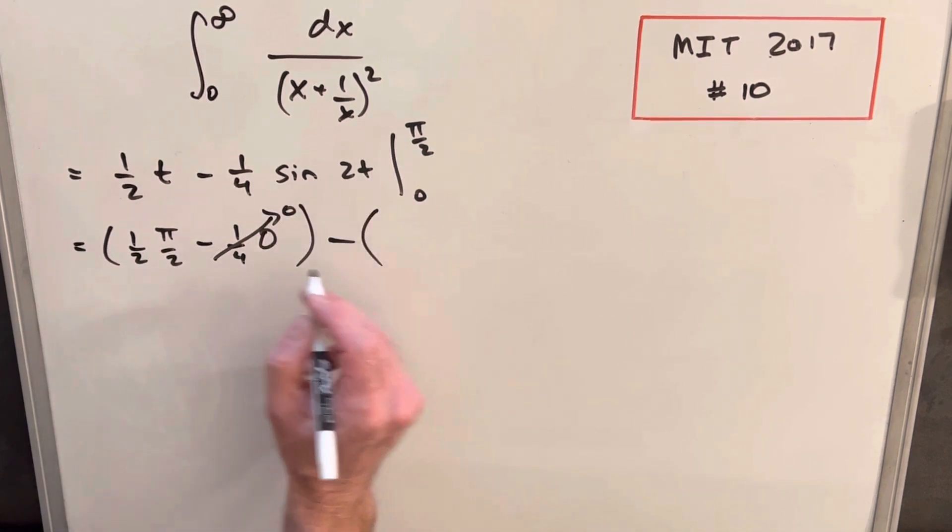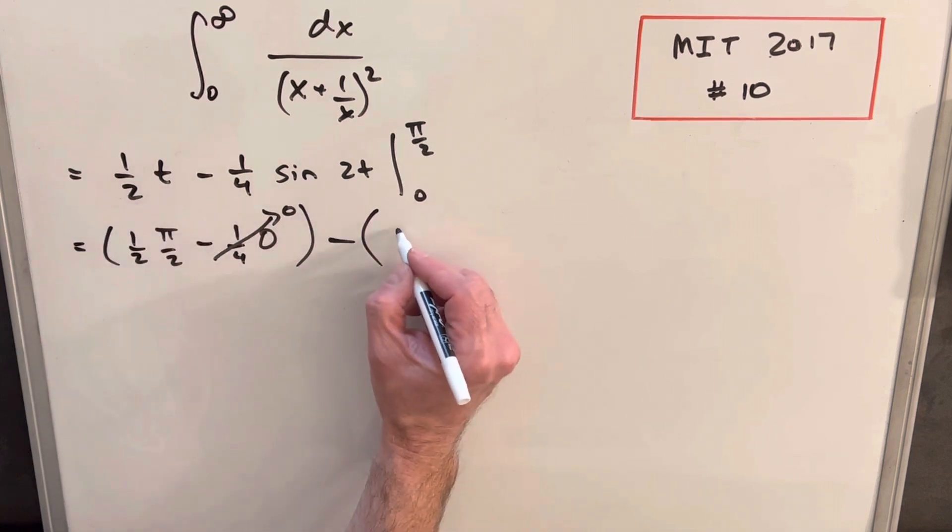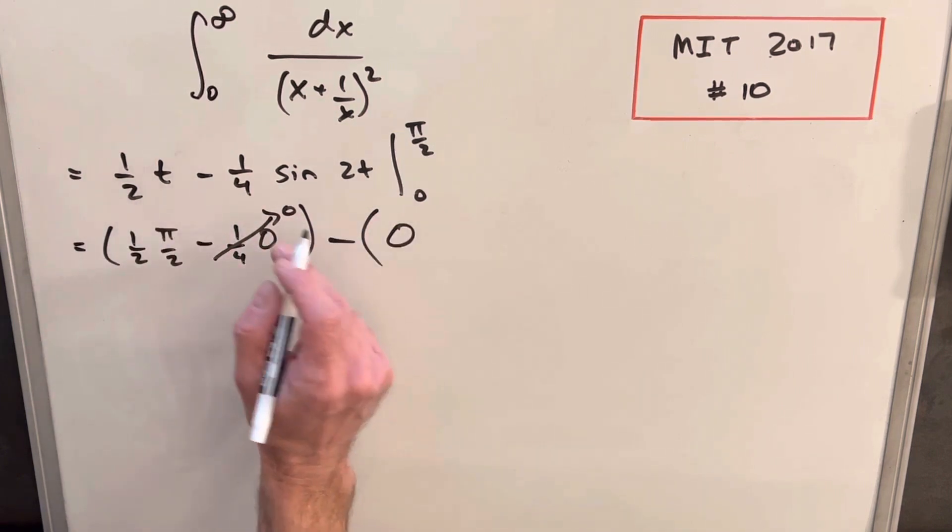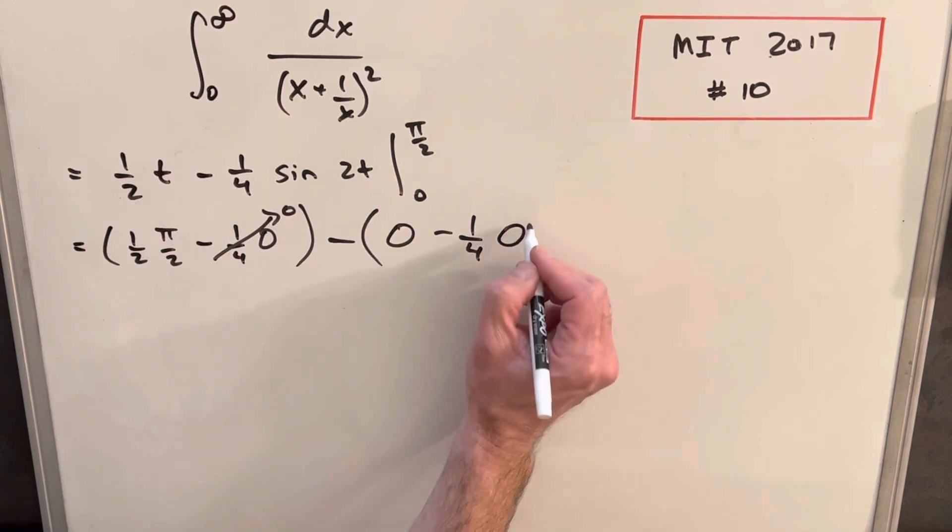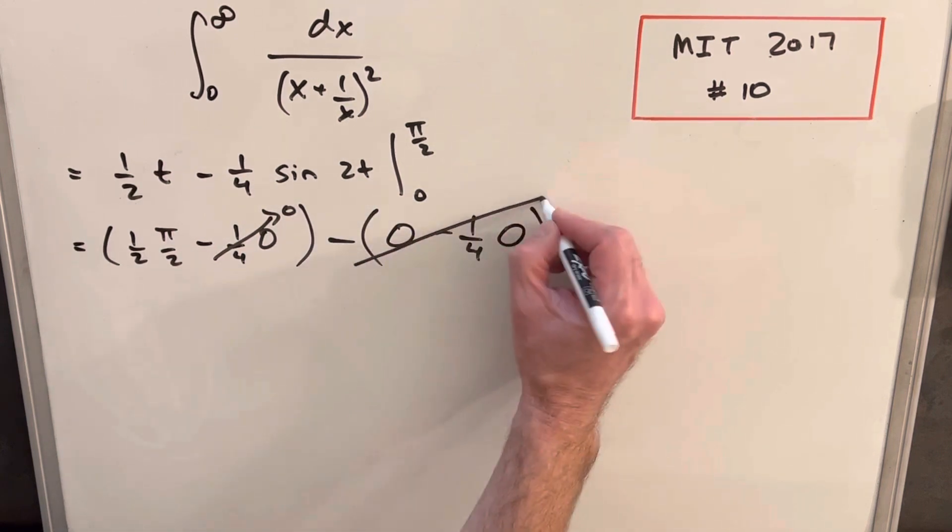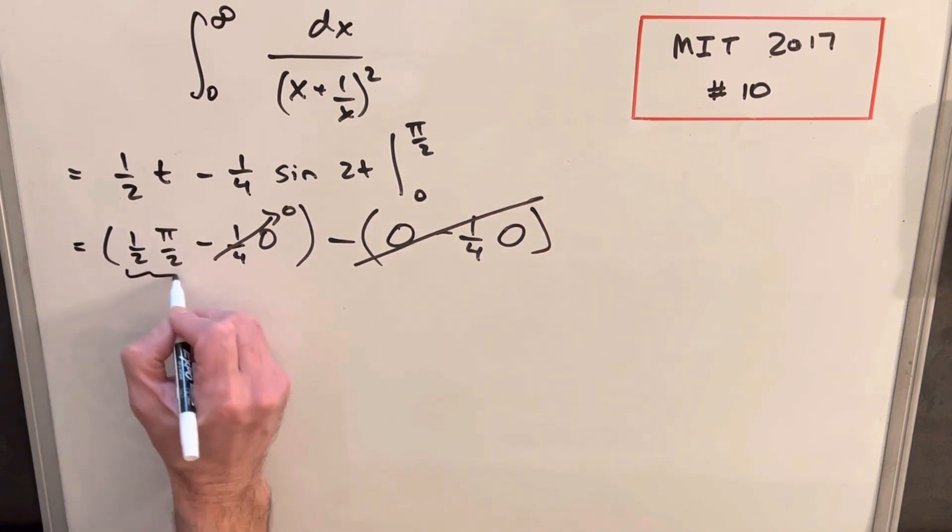Then plug in the next part minus half times 0 is just going to be 0. Plug in a 0. And then minus 1 over 4, sine of 0 is also 0. So this whole piece is 0. This is 0. We're just left with this.